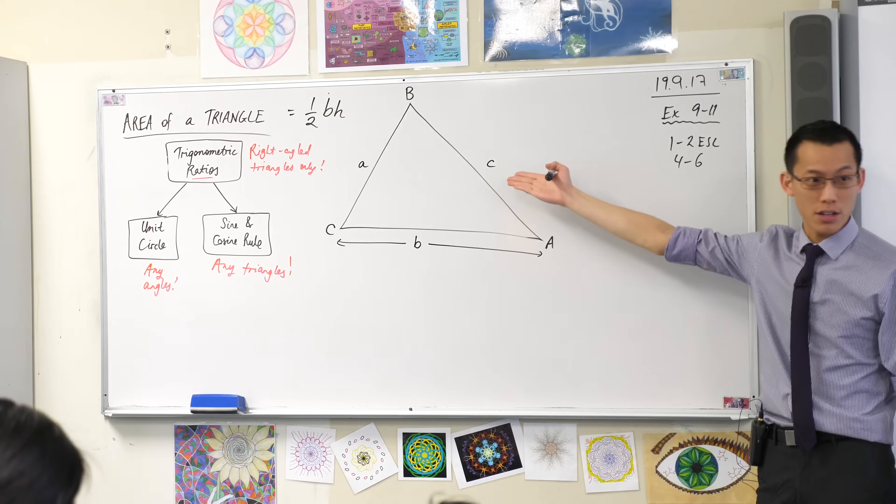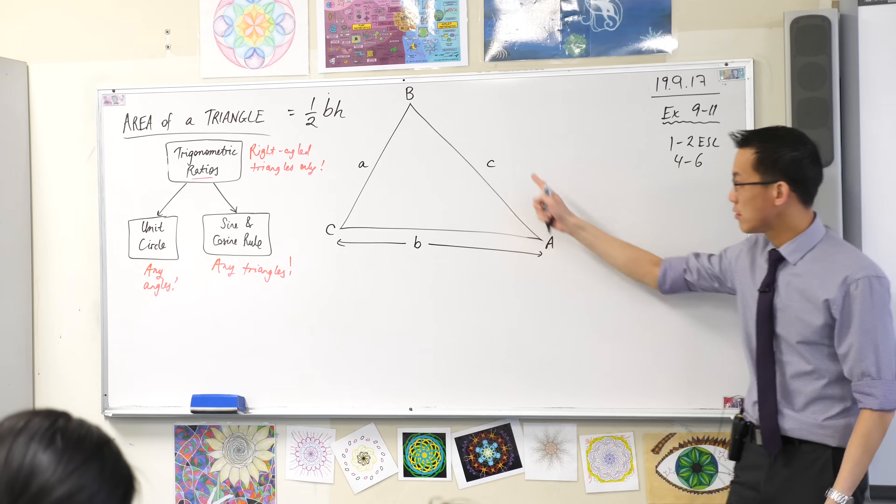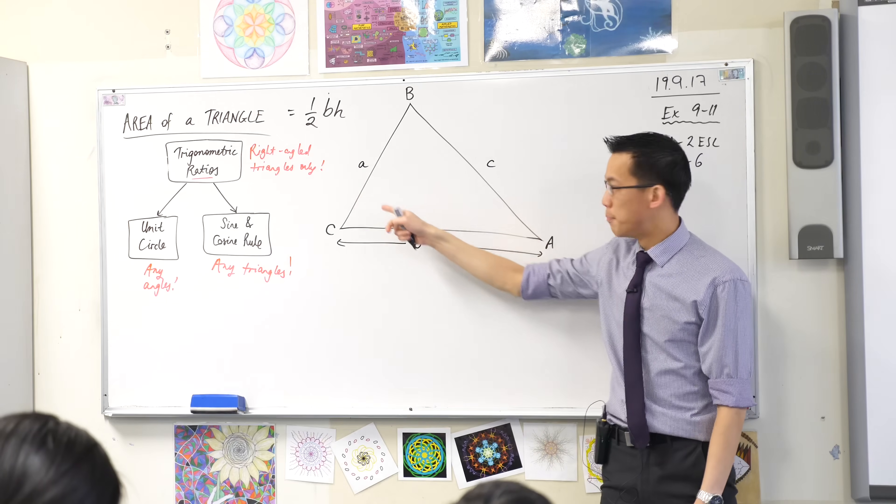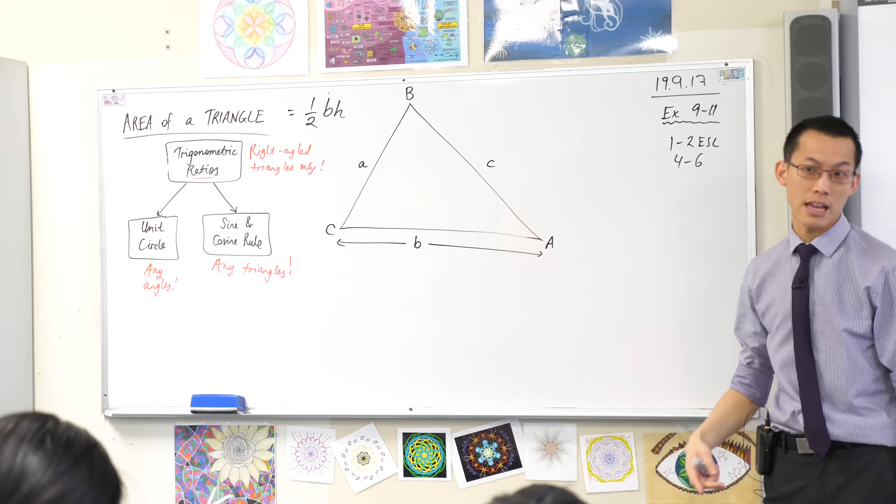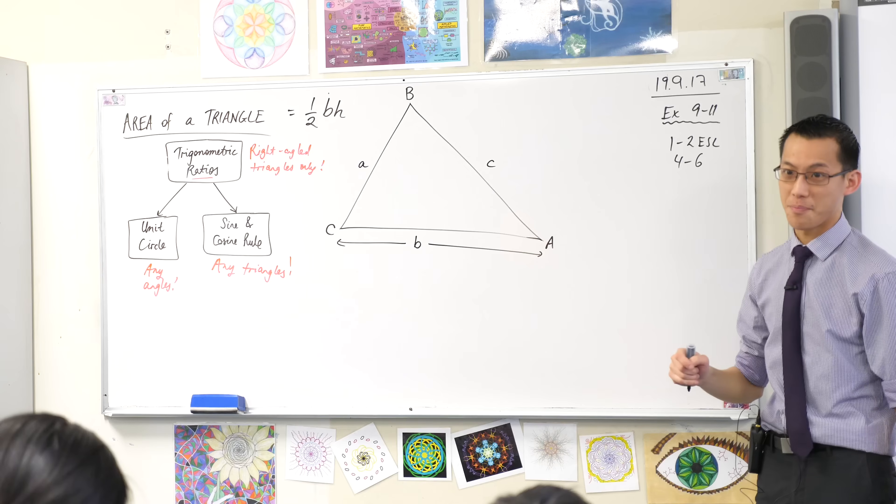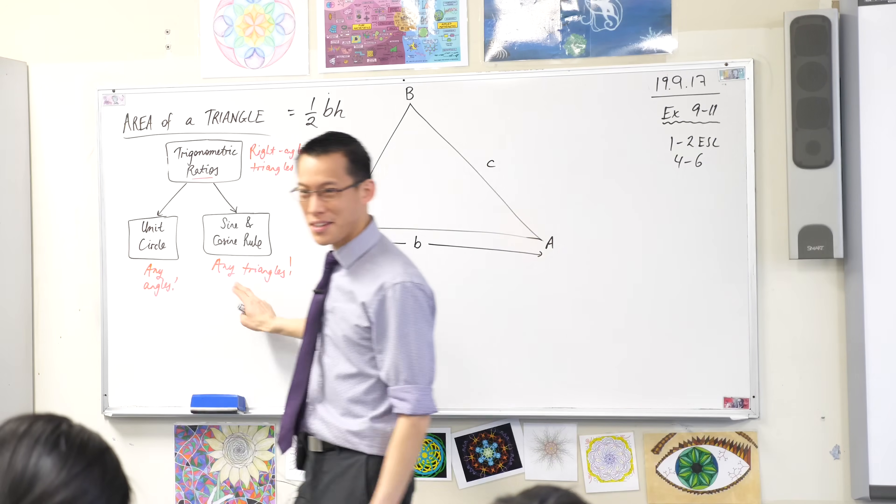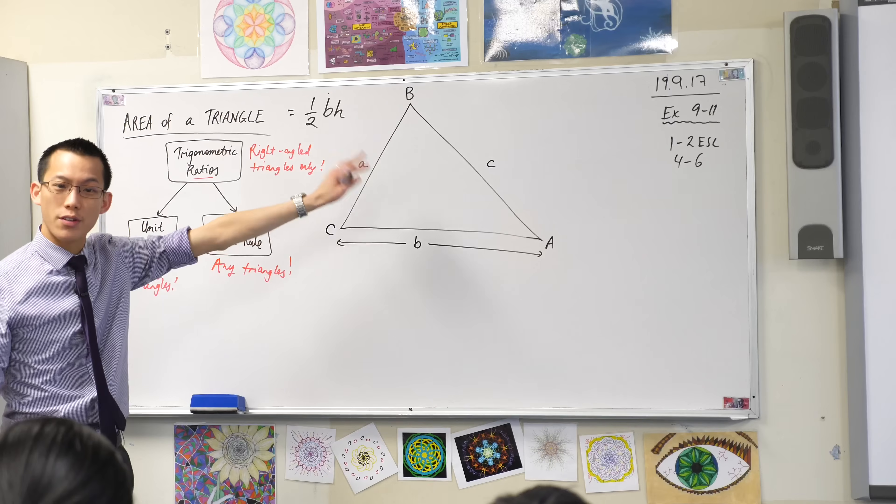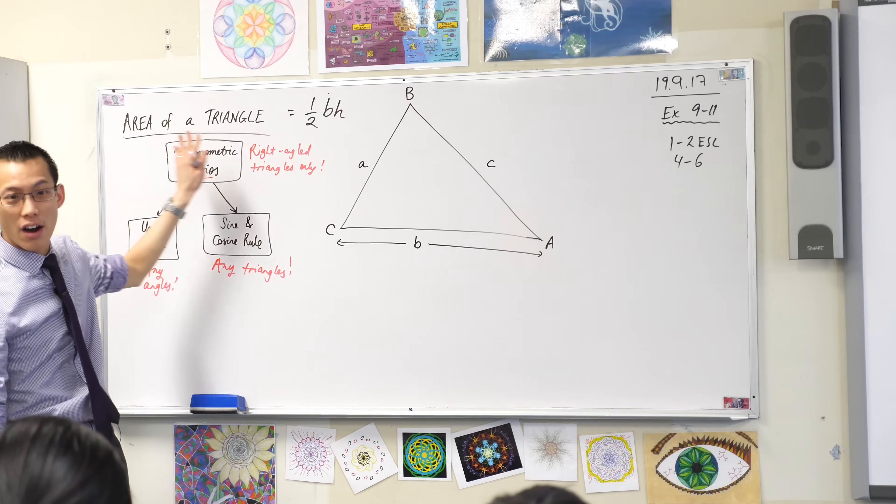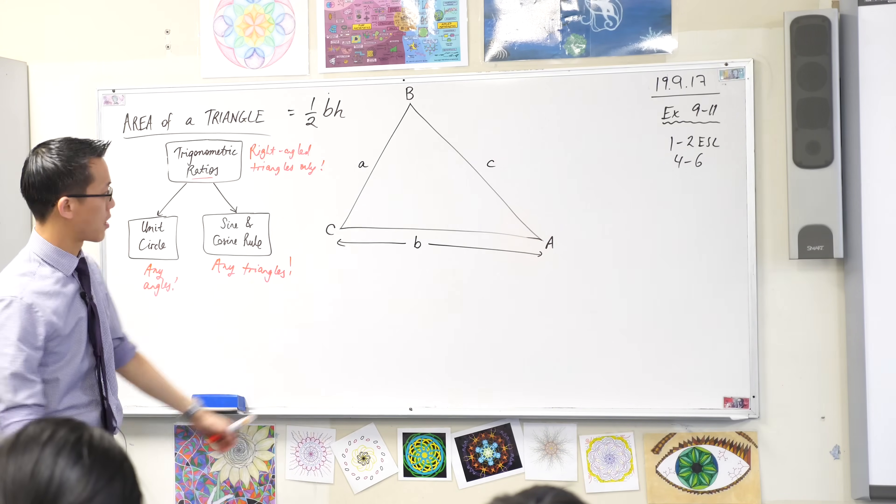So you can't always use this formula. If, for example, you have a triangle like this, and you've got side lengths, but none of these are perpendicular to any of the others, well, you're kind of stuck. You cannot use a half base times height. But now that we know we can use trigonometry to get away from right angle triangles, we can use trigonometry to find the area, the area of any triangle whatsoever.